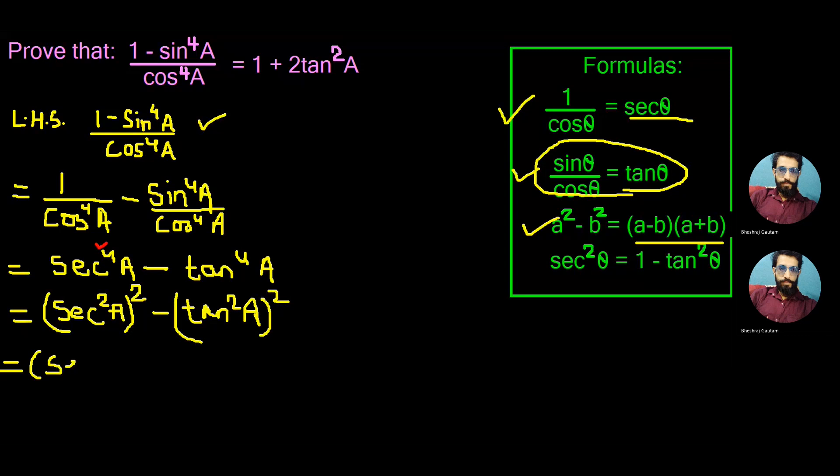Now we'll write this as sec square A minus tan square A in place of (a minus b), and sec square A plus tan square A in place of (a plus b) when we compare with the formula.